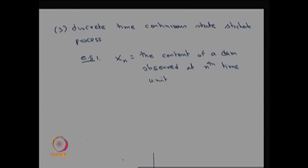That content is a real quantity. Therefore, the parameter space T corresponds to observations at discrete time units — every hour, daily, or weekly — so I can make a one-to-one correspondence with countably finite or countably infinite numbers. The state space S represents the possible values of X_n for all n, which is the water content of the dam — a real quantity, so x ≥ 0.